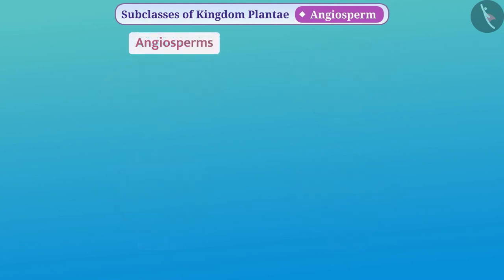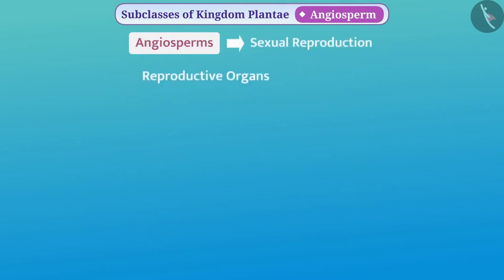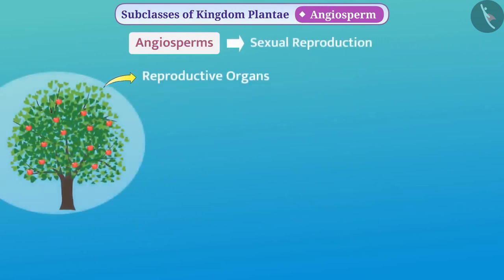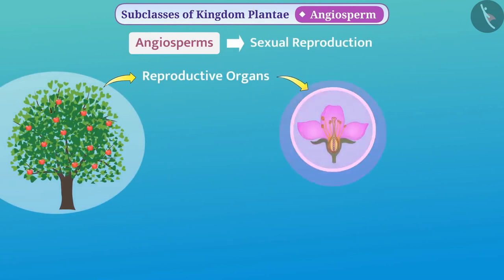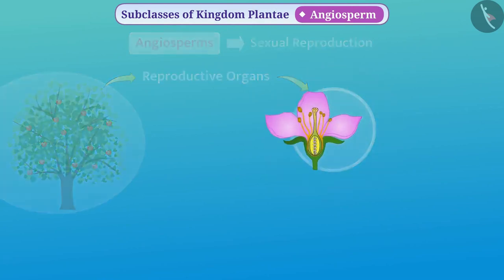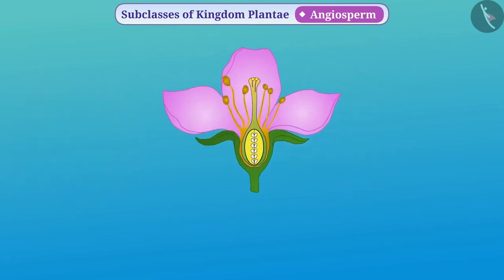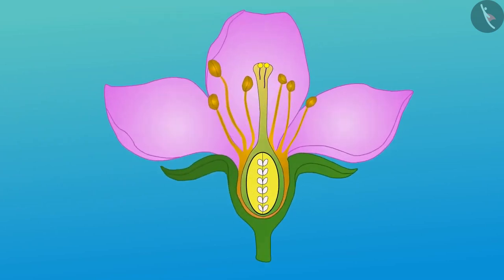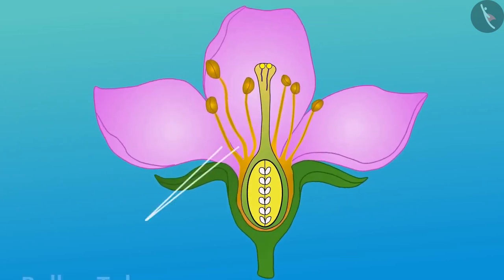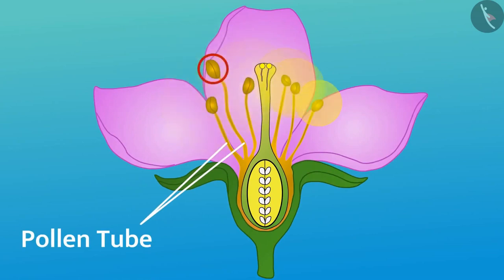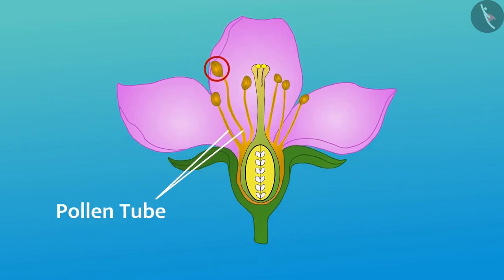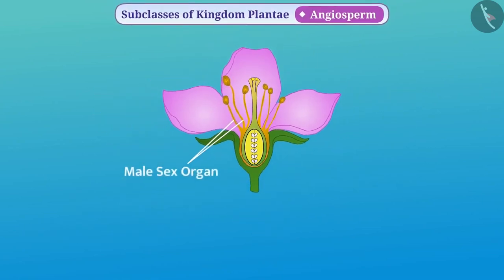Angiosperms produce offspring through sexual reproduction. The reproductive organs of these plants are found in flowers. If you look inside the circle of petals of the flower, you will find some thin tubes having inflated tops — these are the male sex organs of the plant, called stamens.